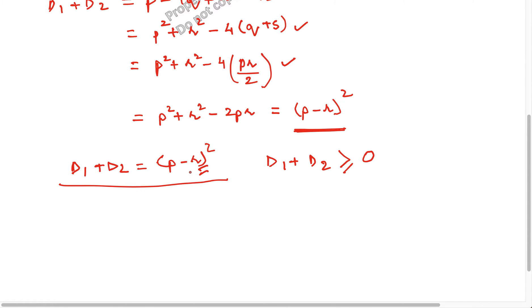This number cannot be negative. And if D1 + D2 is equal to zero, then both of them cannot be negative. Both cannot be negative. Because if both are negative, this number will be less than zero. So both cannot be negative.